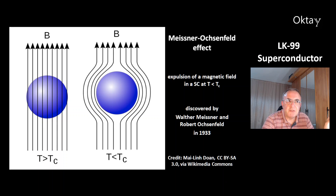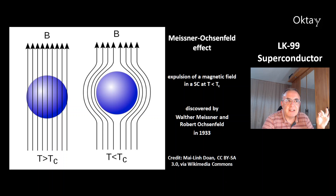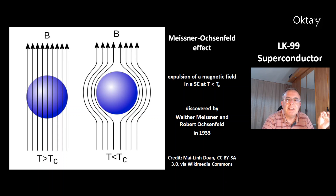This is an explanation of the Meissner-Ochsenfeld effect. At the left, that's the temperature above the critical temperature. At the right, that's the situation below the critical temperature. The Meissner-Ochsenfeld effect is an expulsion of a magnetic field from a superconducting material. This effect was discovered by Walter Meissner and Robert Ochsenfeld in the year 1933.